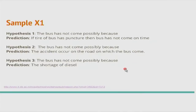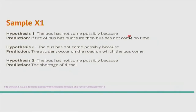Sample x1: the bus has not come possibly because — nothing stated — and if the tire of the bus got punctured then the bus has not come on time. Obviously there is no hypothesis here and what is stated as a prediction is actually a hypothesis statement. We will not go to this one.